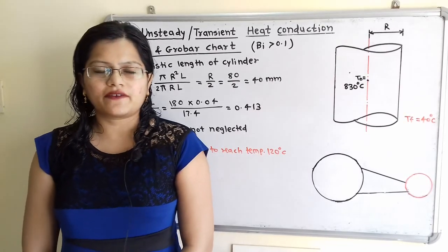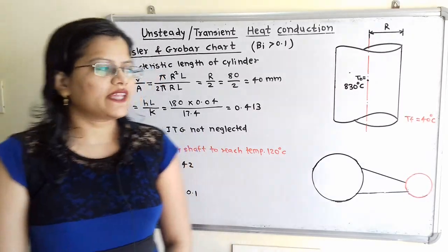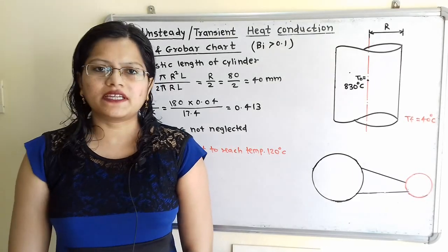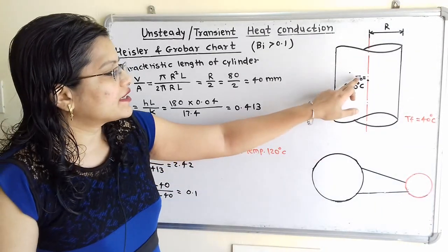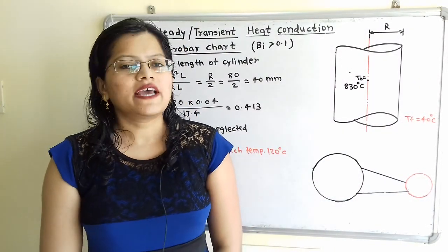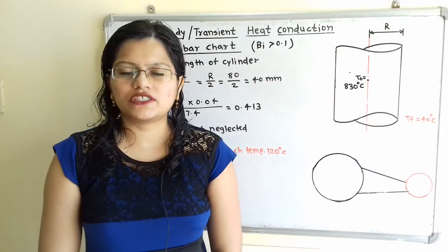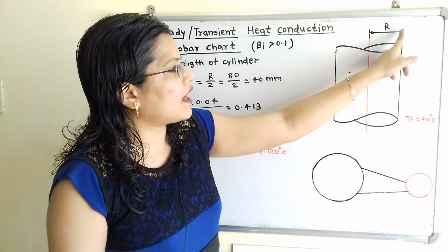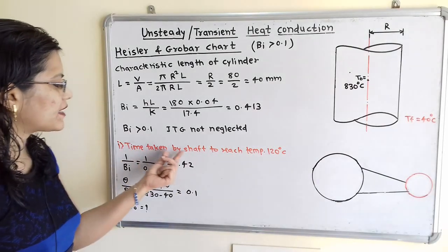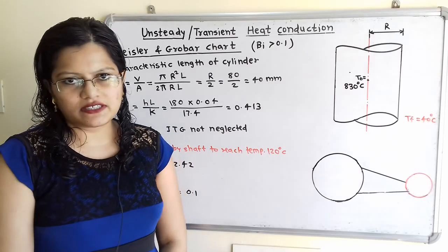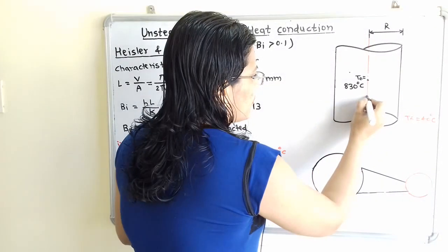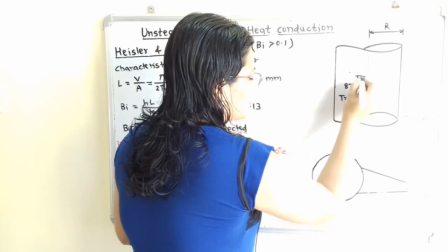Let us understand the given data with the help of a diagram. The initial temperature at the center of the cylinder at time T = 0 is T0 = 830°C. The surrounding temperature is Tf = 40°C and the radius of the cylinder is R = 80 mm. We have to find the time taken by the shaft center to reach 120°C.